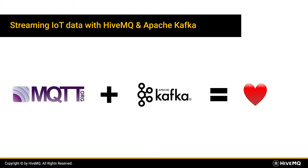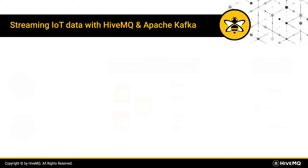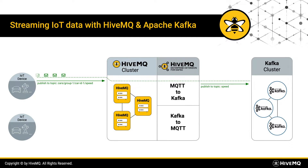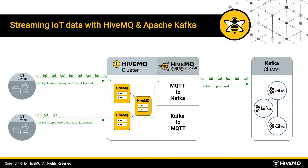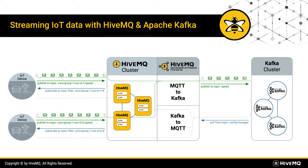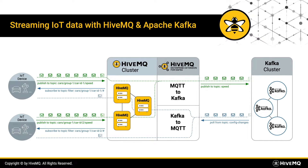We will now have a closer look at our HiveMQ Enterprise Extension for Kafka. The HiveMQ Enterprise Extension for Kafka benefits from the native implementation of both MQTT and Kafka protocol. The implemented native Kafka protocol inside the HiveMQ broker allows for seamless integration of MQTT messages with a single Kafka cluster or multiple Kafka clusters at the same time, while still fully supporting 100% of the entire MQTT3 and MQTT5 specification.